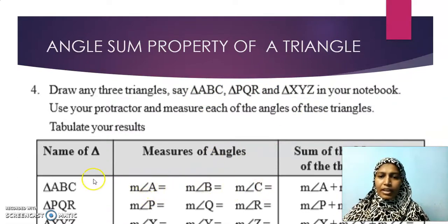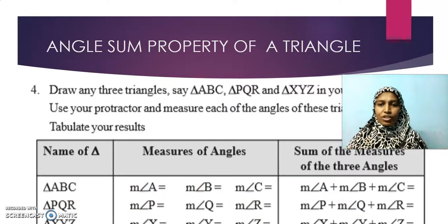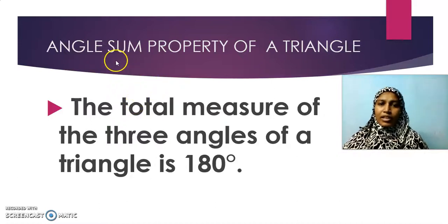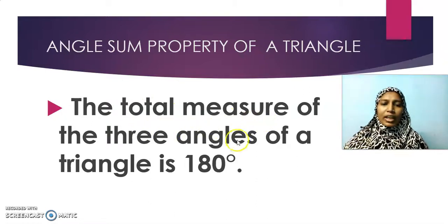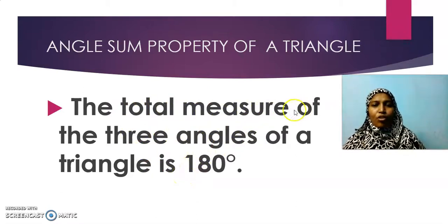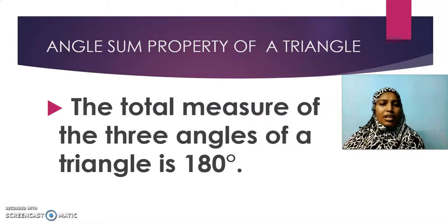You will add the angles and see what you get. Similarly, add angle P, angle Q, and angle R for triangle PQR. Let all three triangles be of different shapes so you get a clear idea. The angle sum property is stated as: the total measure of all three angles of a triangle is 180 degrees. That is what we have seen so far through different activities.